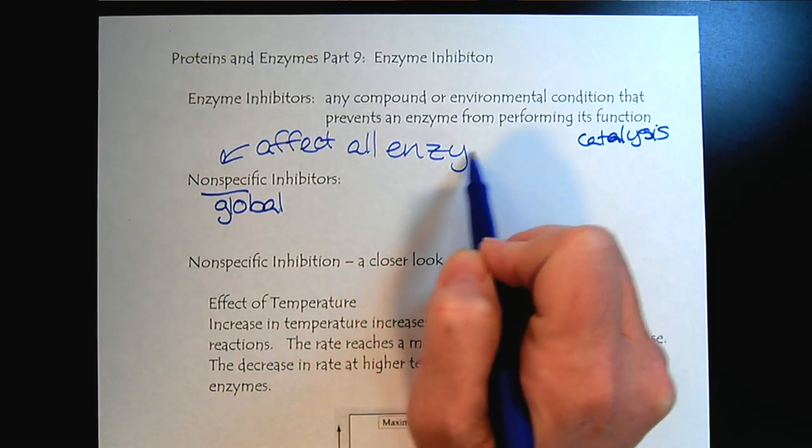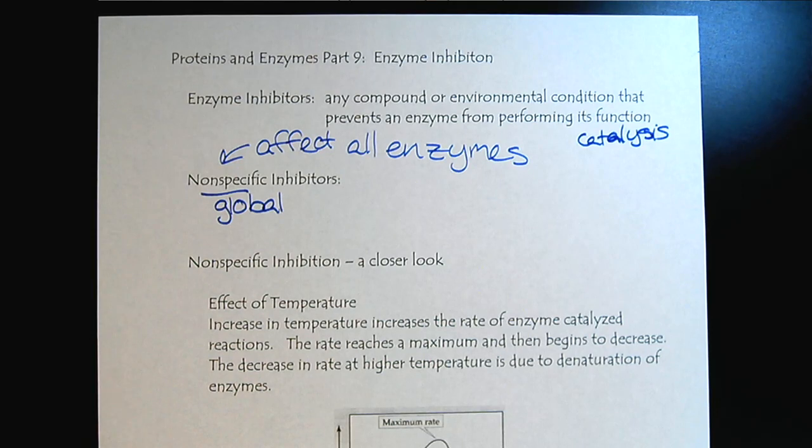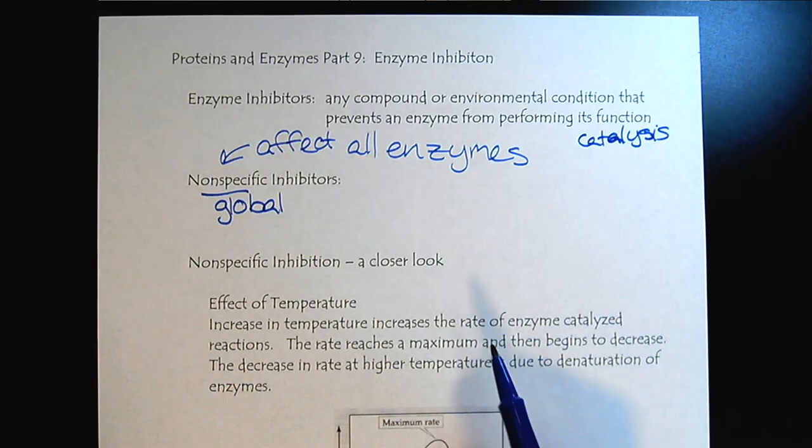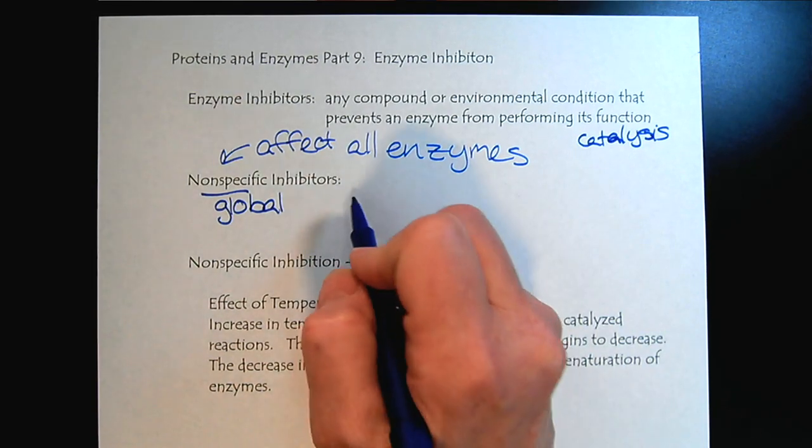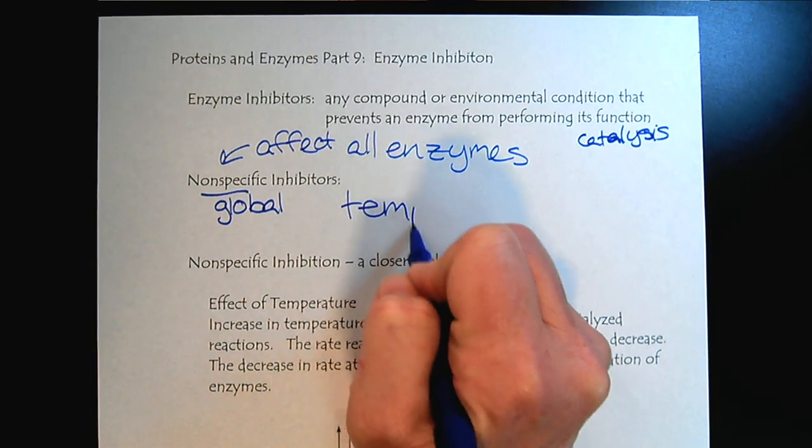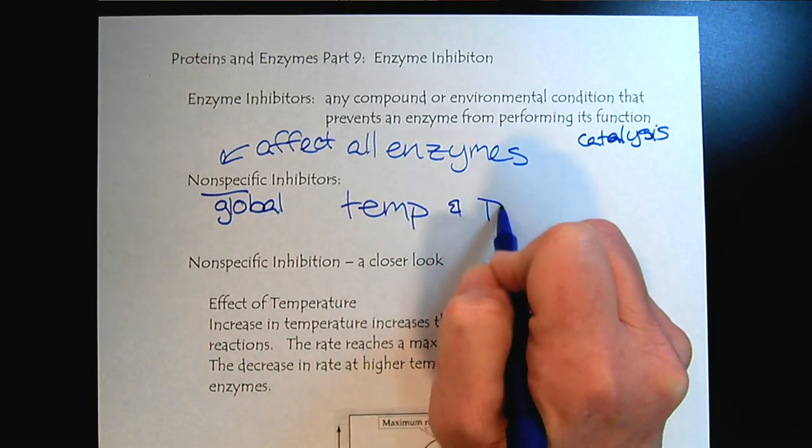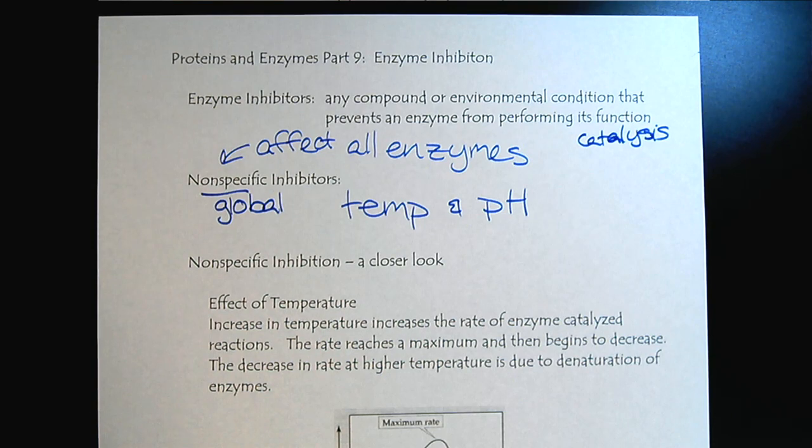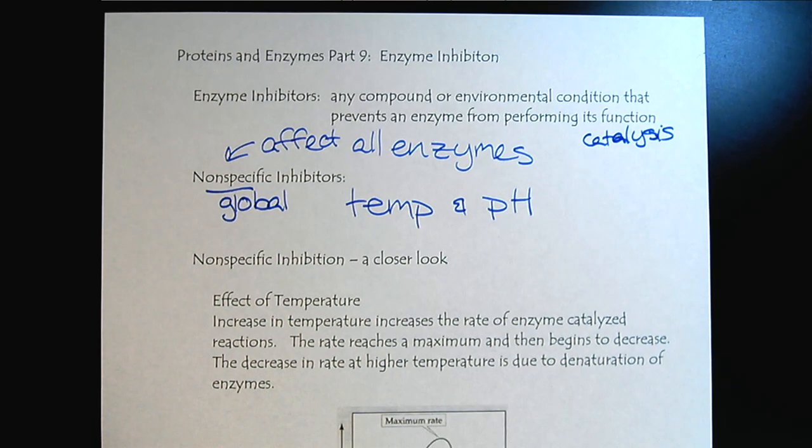And so I'm sure several of these can come to mind, because we're talking about catalysis of reactions and things that we know that influence reactions are temperature and pH. So let's look a little more closely at the exact consequences of how temperature and pH affect enzymes.